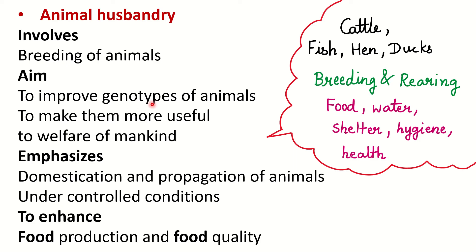What is a genotype? Recall from Mendel's cross that T or t — those letter combinations are called genotypes. Genotypes are essentially the genes of the animal. Through animal husbandry, we improve those genotypes to make animals more useful to the welfare of mankind.